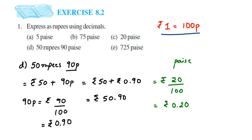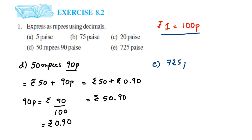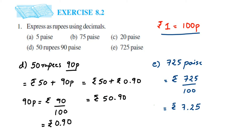For mixed questions like that, just convert only the paise, keep the rupees as-is, then add them at the end. The last question is 725 paise. Divide by 100: 725/100 rupees. Two zeros, so two places from the right — five, then two, put the decimal, then seven — giving 7.25 rupees. I hope this is clear; if you have any questions, drop a comment. Thank you for watching!